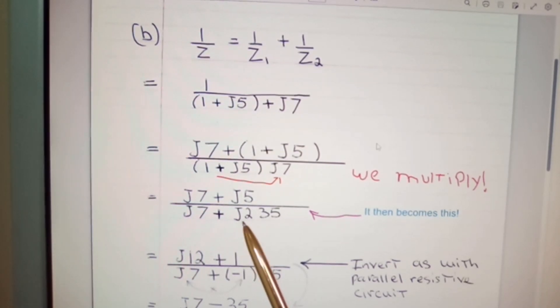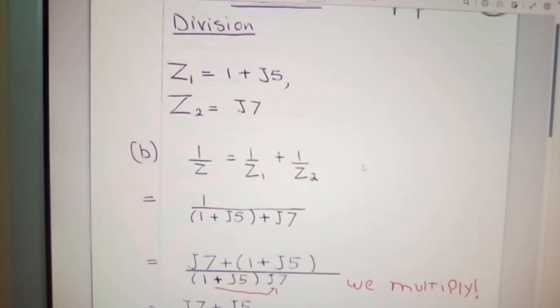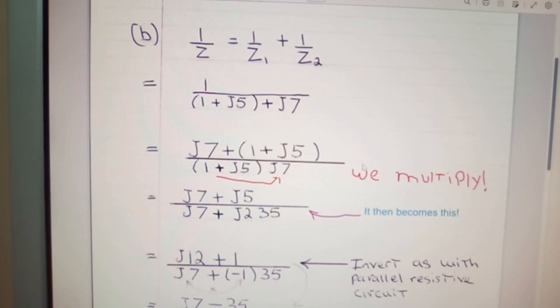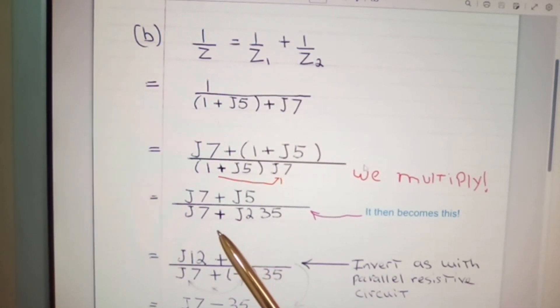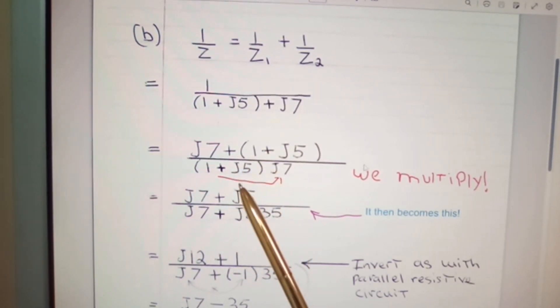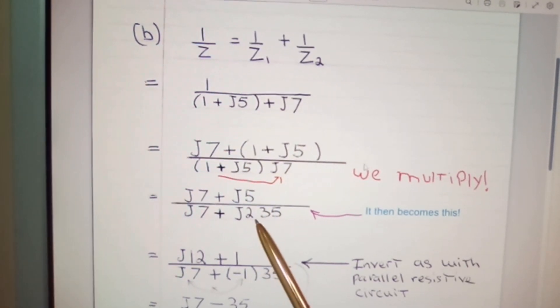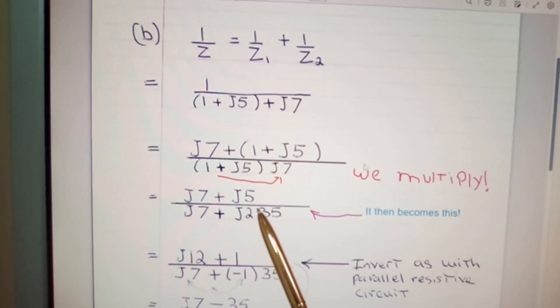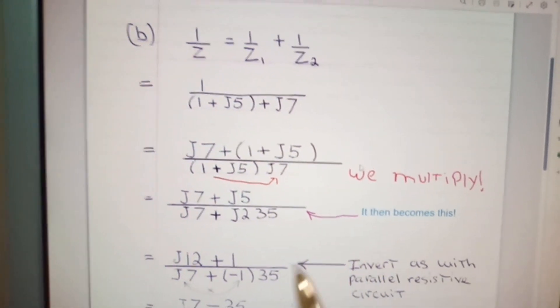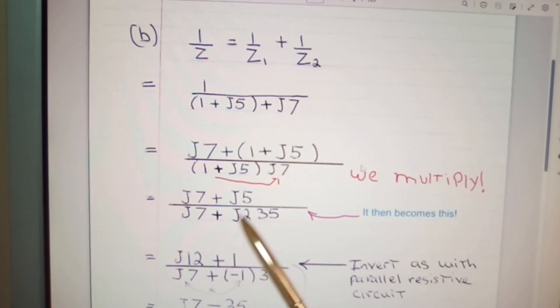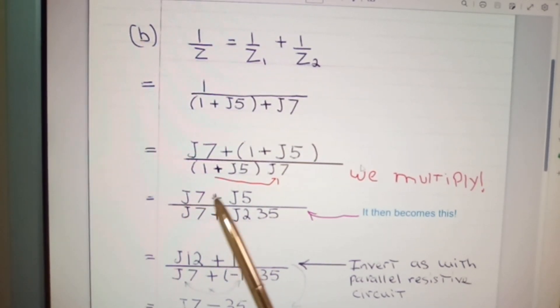And something else I've noticed here for myself as well. It's interesting how everything seemed to be right when I was doing it, but yet, here I have J2. It's not J2. My apologies. This is J squared 35. I made the two a little bit too large, so it has thrown me out a little bit. So I repeat: J7 plus J5 over J7 plus J squared 35.